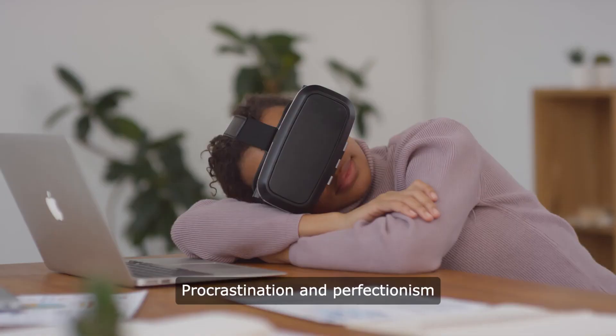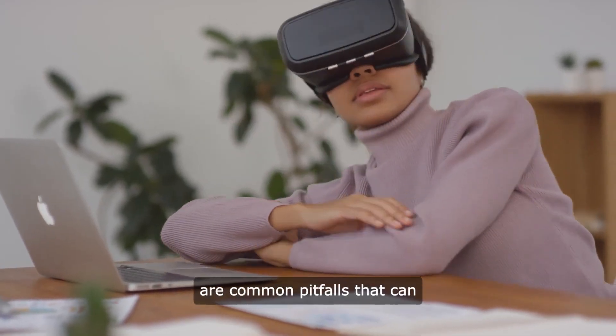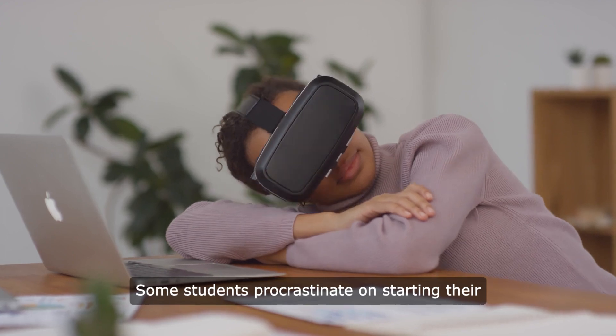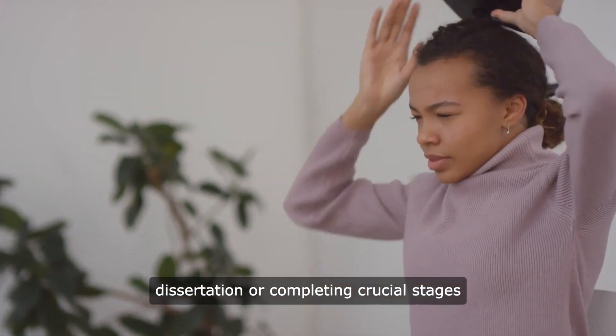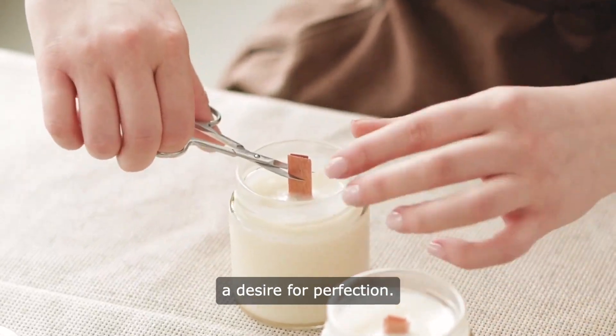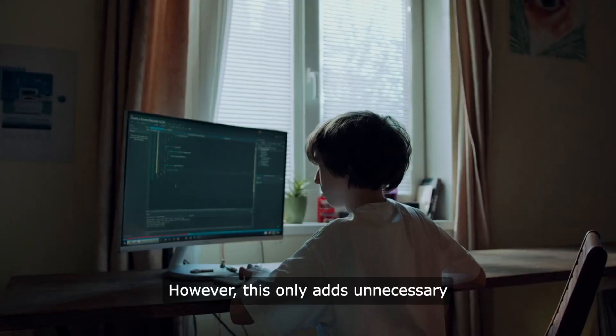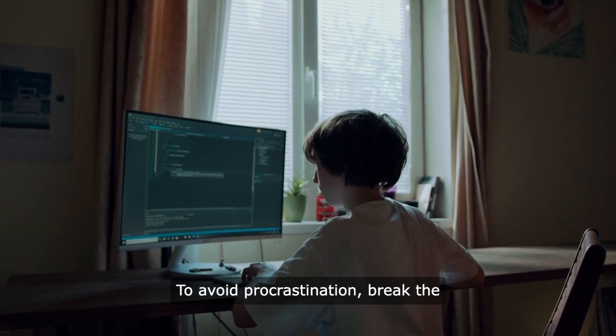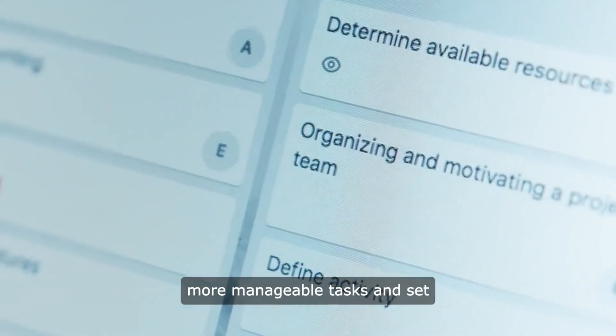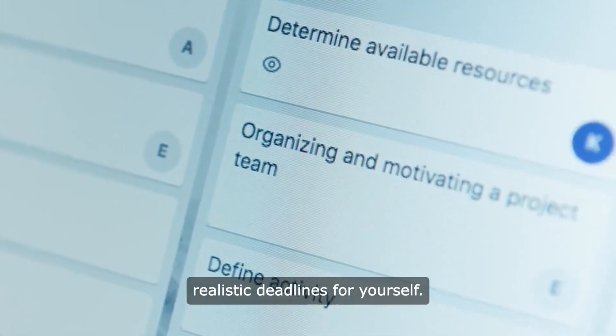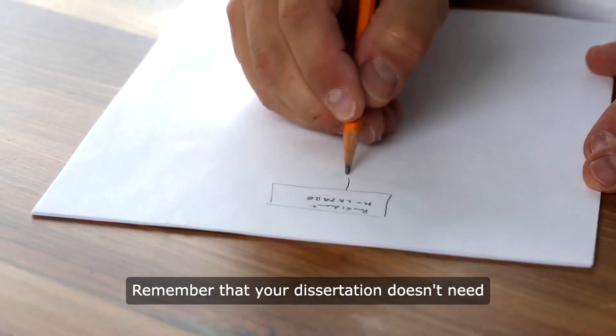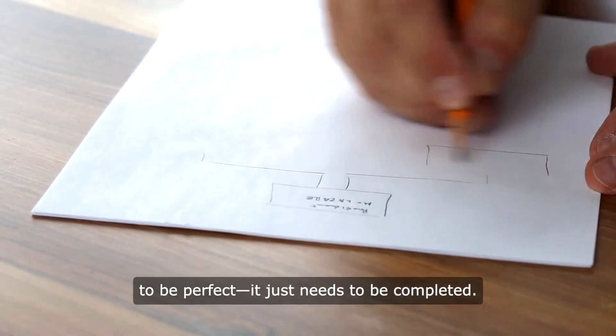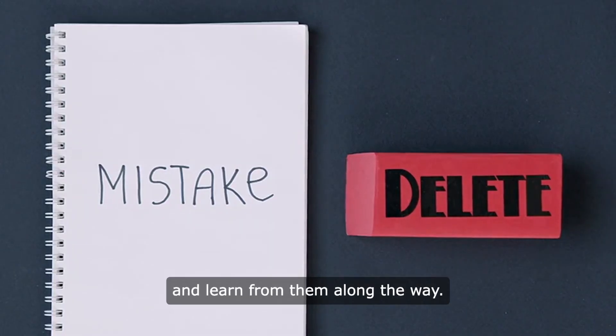Procrastination and Perfectionism. Procrastination and perfectionism are common pitfalls that can derail the dissertation process. Some students procrastinate on starting their dissertation or completing crucial stages due to fear of failure or a desire for perfection. However, this only adds unnecessary stress and pressure. To avoid procrastination, break the dissertation process into smaller, more manageable tasks and set realistic deadlines for yourself. Remember that your dissertation doesn't need to be perfect, it just needs to be completed. Allow yourself to make mistakes and learn from them along the way.